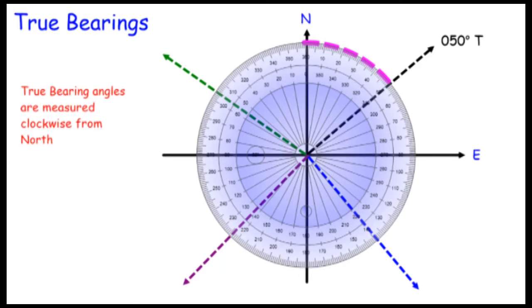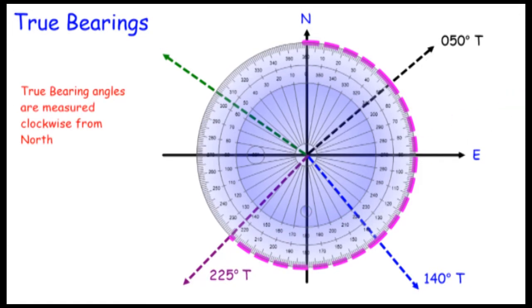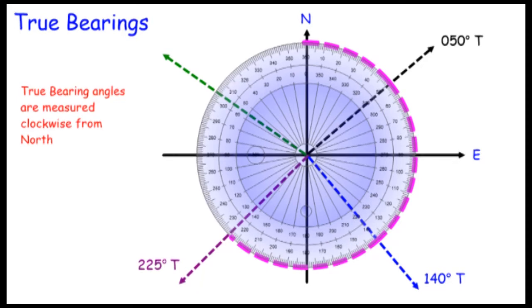Continuing around to the blue bearing line, that bearing is 140 degrees true. Keeping going around to the purple line, that's about 225 degrees. Adjusting it — yes, that purple bearing line is 225 degrees true. And continuing around to the green bearing line, that's about 305 degrees.